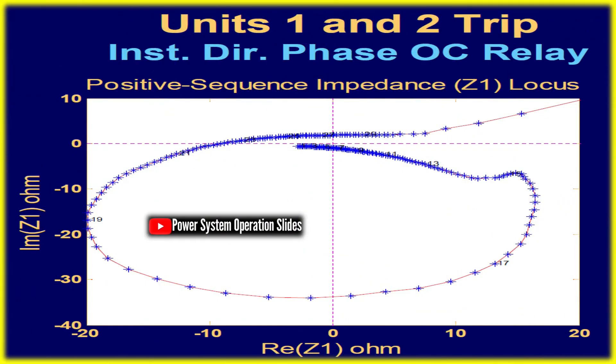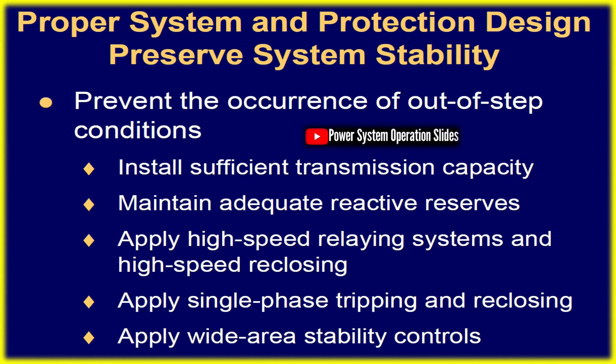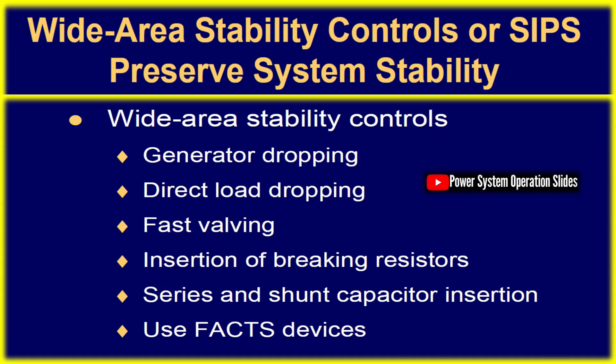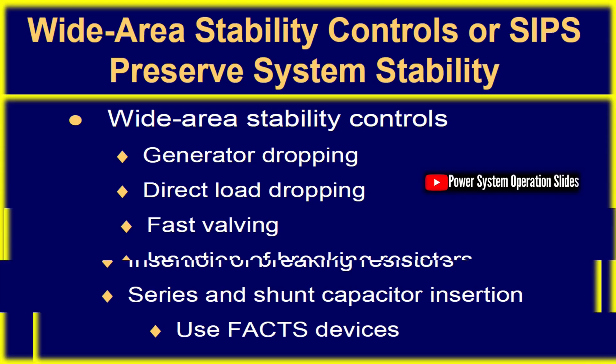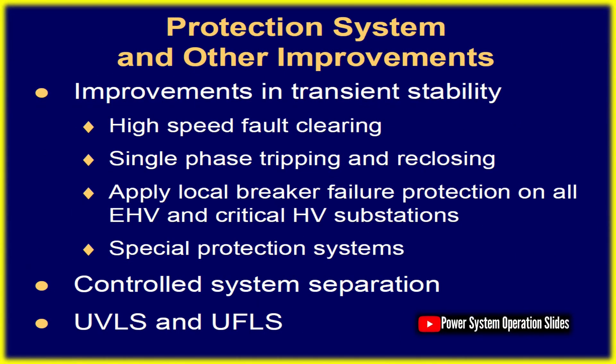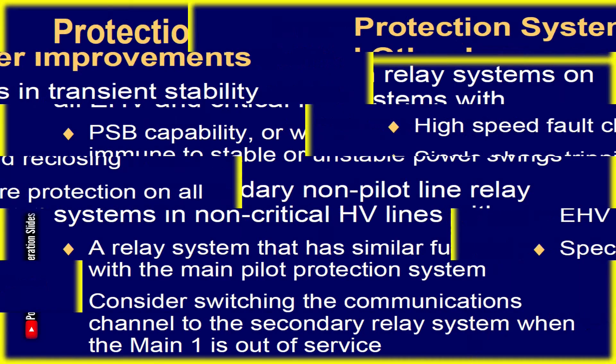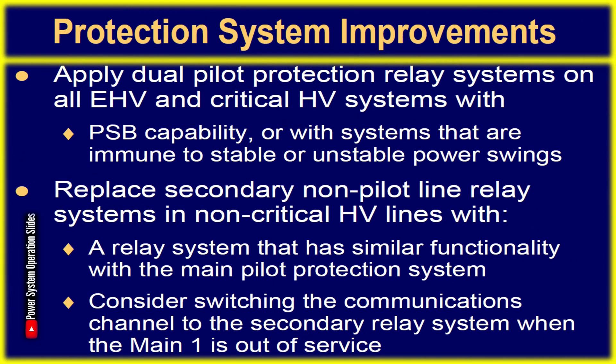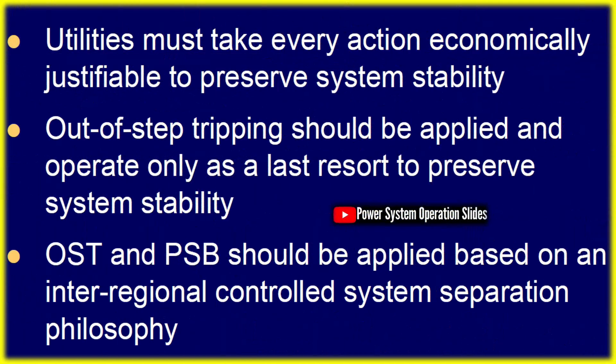Detecting an OOS condition typically involves analyzing apparent impedance at the generator terminals. Transient stability studies determine whether a generator can retain synchronism under various contingencies. During an OOS event, the impedance shifts reflect voltage and angular differences. When system sources are in phase (0 degree angle difference), generator terminal voltage peaks while current remains low. In contrast, when fully out of phase (180 degrees apart), voltage drops to a minimum while current spikes. To distinguish OOS conditions from actual faults, protection devices analyze the rate of voltage, current, and impedance changes. Fault conditions cause near-instant impedance shifts within milliseconds.